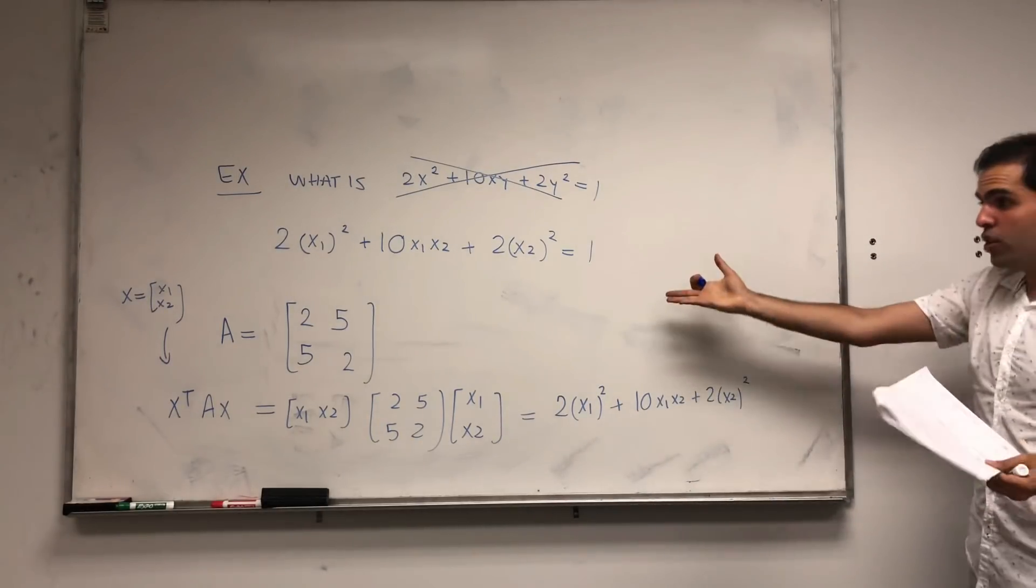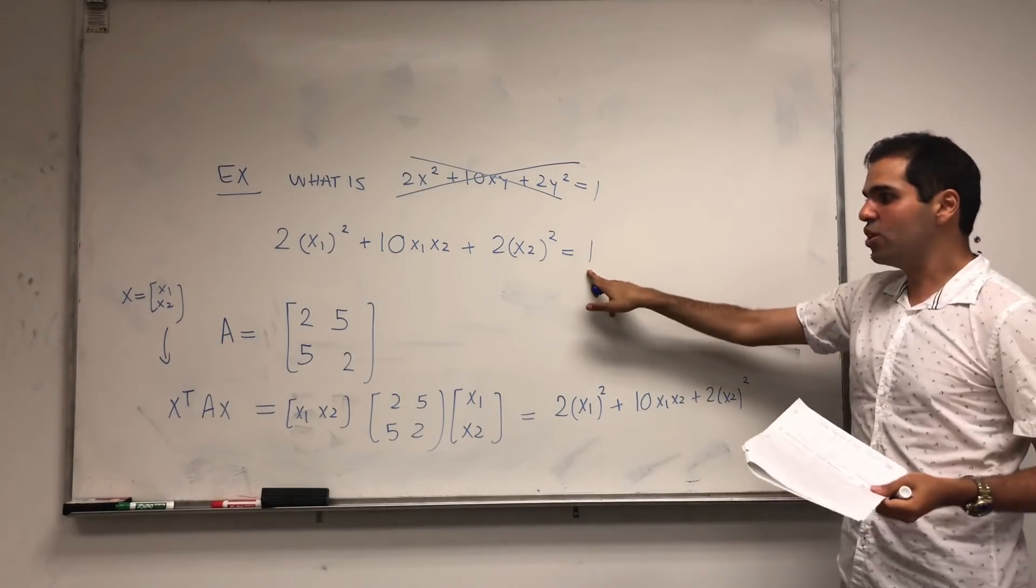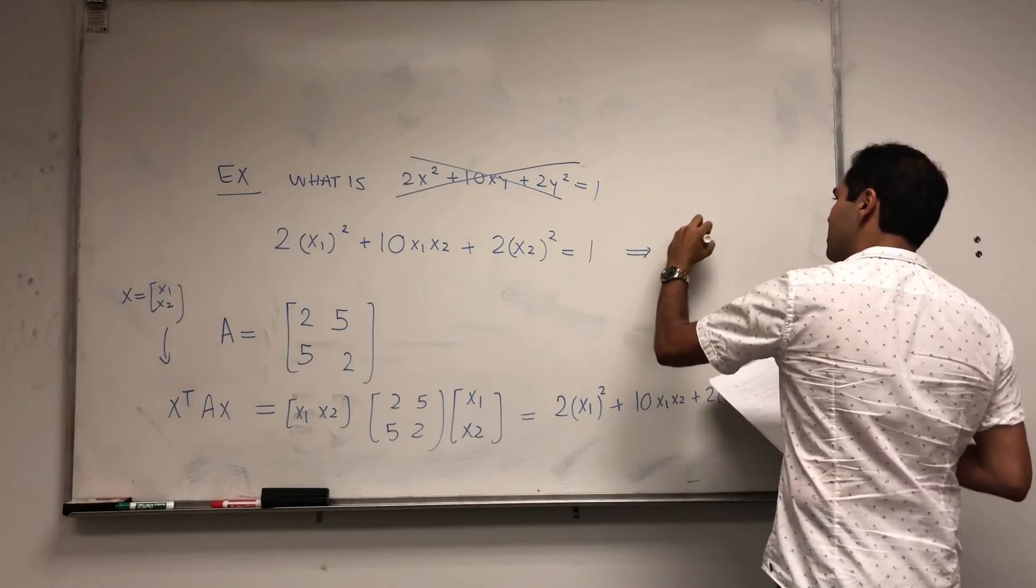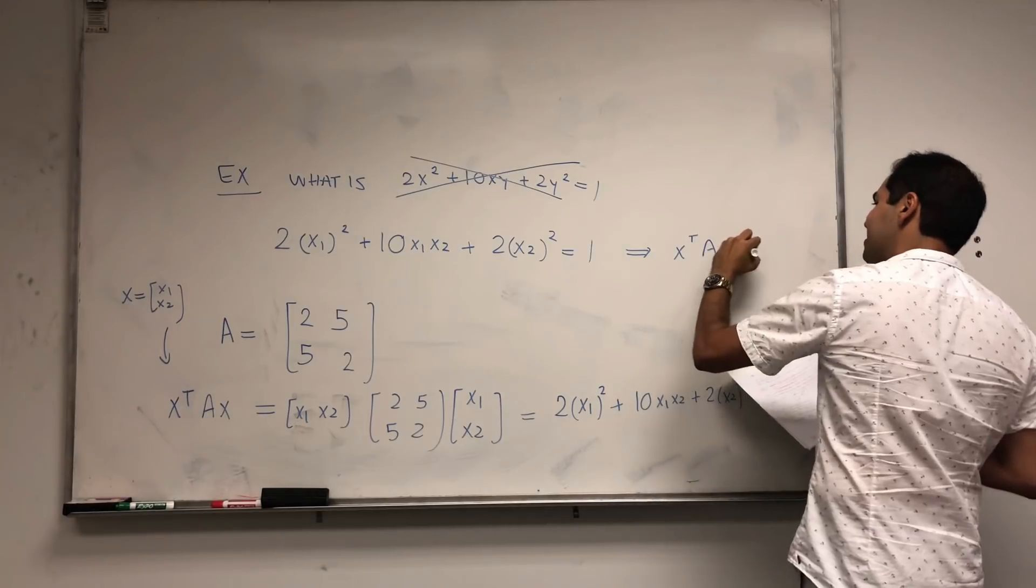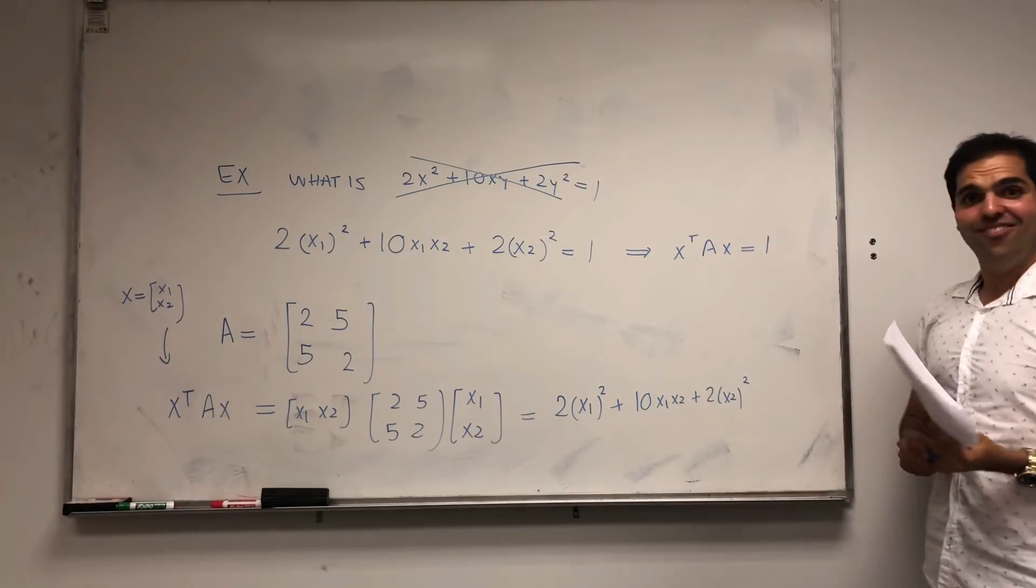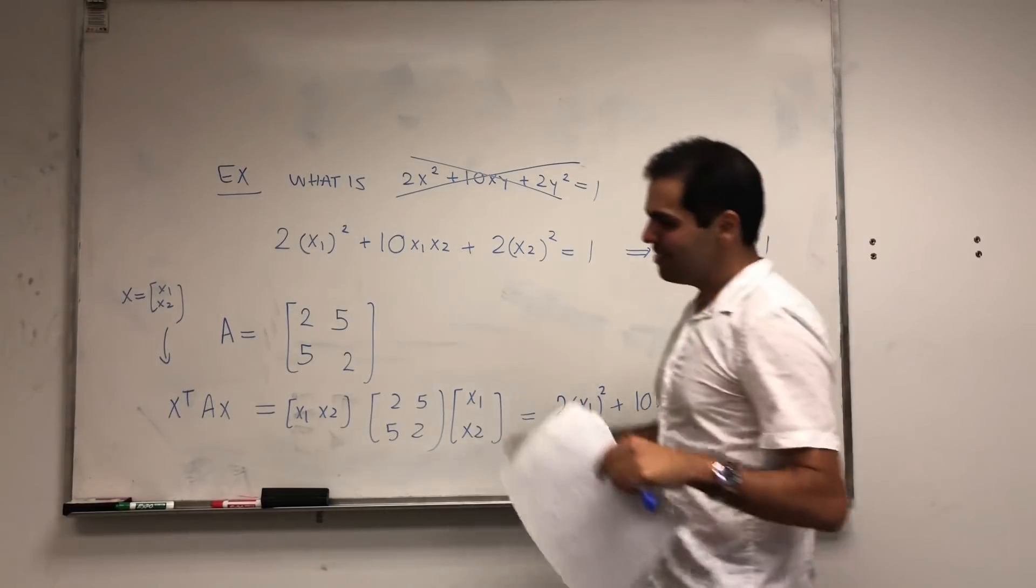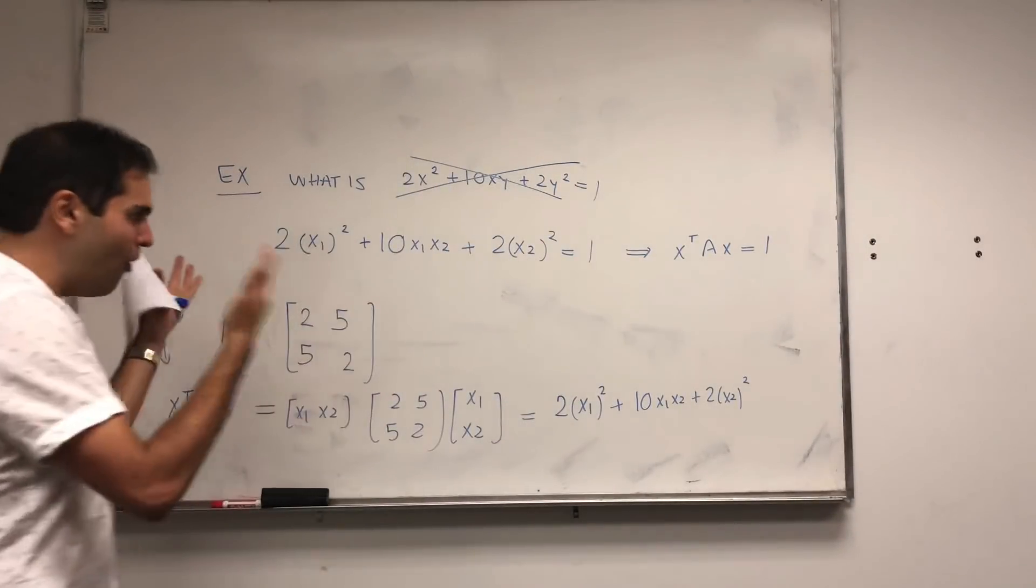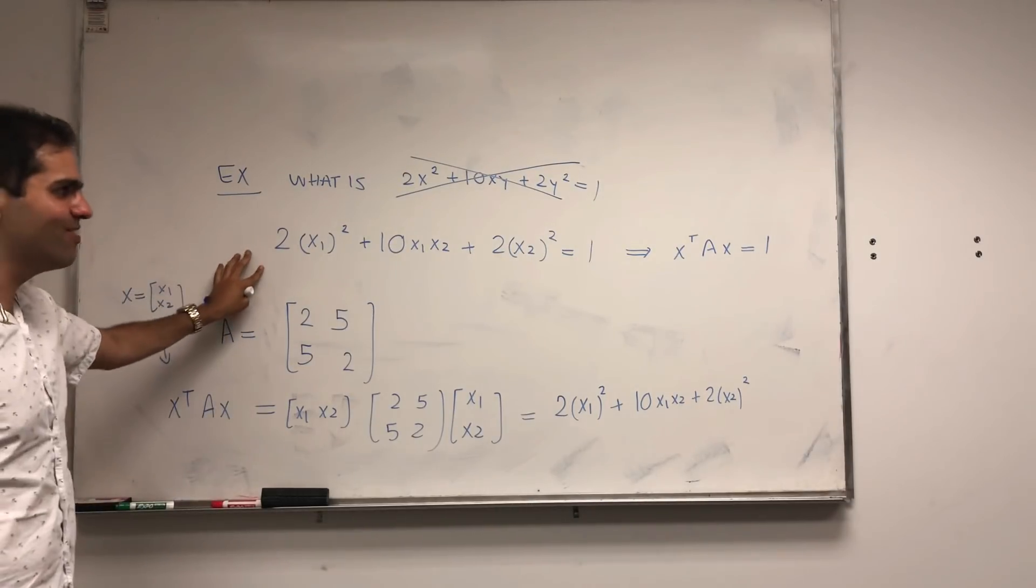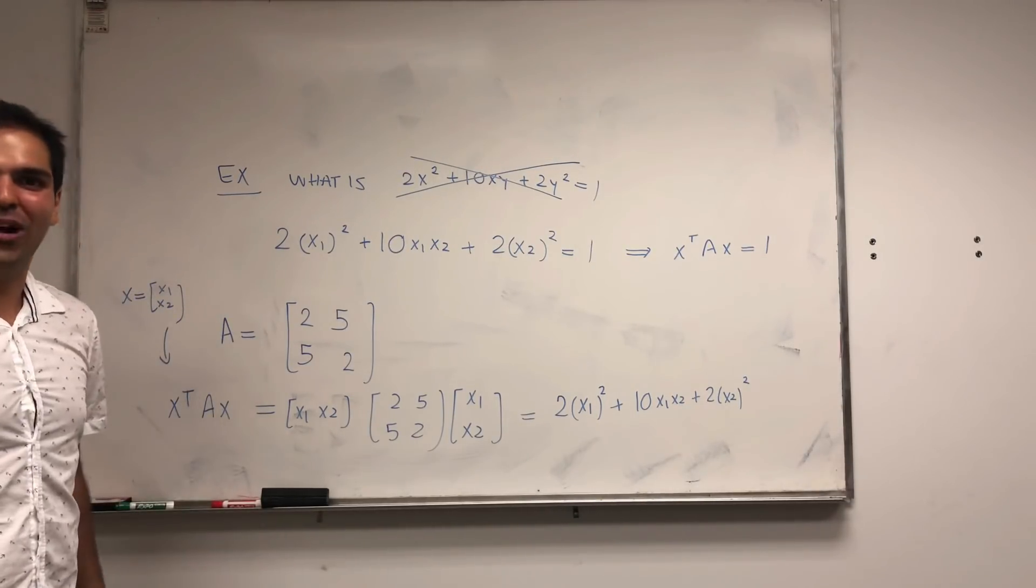So it turns out then, this equation you can conveniently write in terms of A. So this just becomes X transpose AX equals to 1. Very good, and problem is, all we did is show some aesthetic change, we did some plastic surgery, we haven't really solved the problem at all.